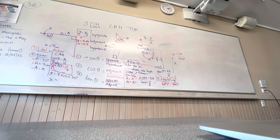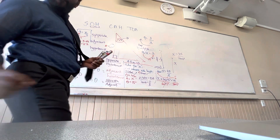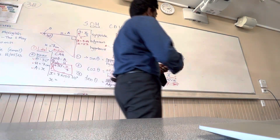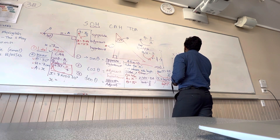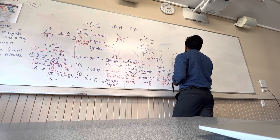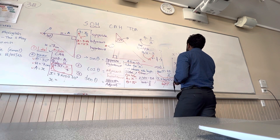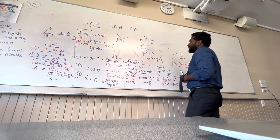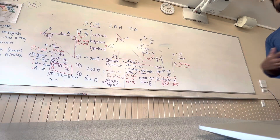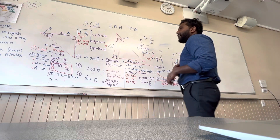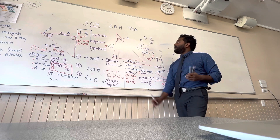For me it comes up as 167.94. Well done — so x is equal to 167.94 meters. That unit is very crucial. Looking back at this question, it's not about the answer — the most important thing is how do we get there.